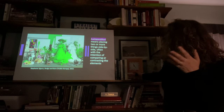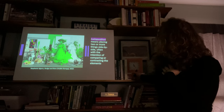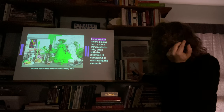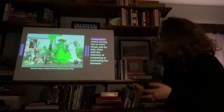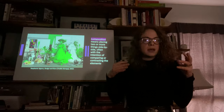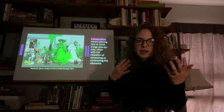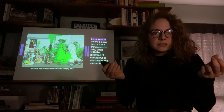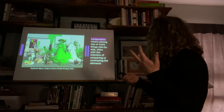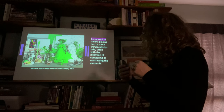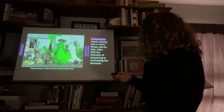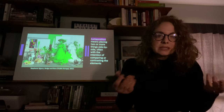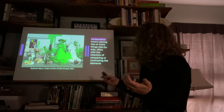Juxtaposition means placing two or more things side by side, often with the intention of comparing or contrasting the elements. This image by Stephanie Syjuco, 'Dodge and Burn: Visual Storage,' has a lot of juxtaposition — the green and white. It's playing on the idea of photography and the green screen, and that color card that has a very racist history because it wouldn't pick up darker skin tones for a long time until it was remade in the 80s. Then it's juxtaposed against the Victorian dress and against African sculptures.